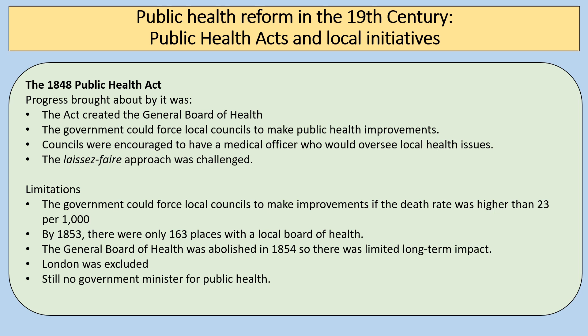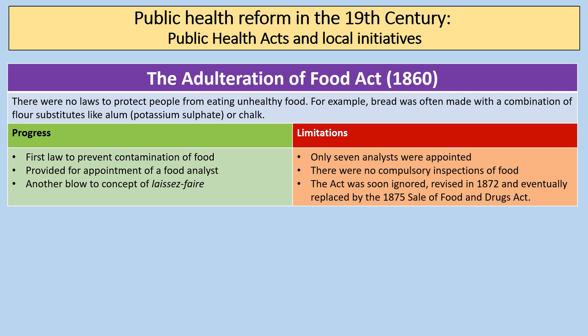The main limitations of the 1848 Act were that the government could only force local councils to make improvements if the death rate was higher than 23 per 1,000. By 1853 there were only 163 local boards of health, and the General Board of Health was actually abolished in 1854. London was excluded and there was no government minister for public health. The 1860 Adulteration of Food Act was the first law to prevent contamination of food and provided for the appointment of a food analyst — another blow to the concept of laissez-faire.